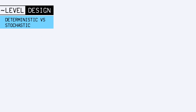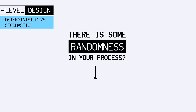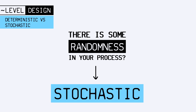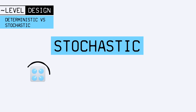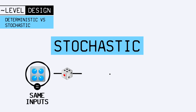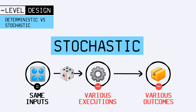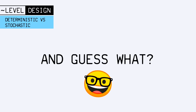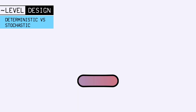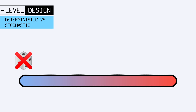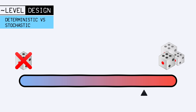On the other hand, processes that do use randomness are said to be stochastic. With stochastic processes, you may get different results even though you use the same inputs. Of course, the neat thing is that there is actually a spectrum between fully deterministic and fully stochastic, and that's usually where procedural generation works, with its in-between controlled randomness.